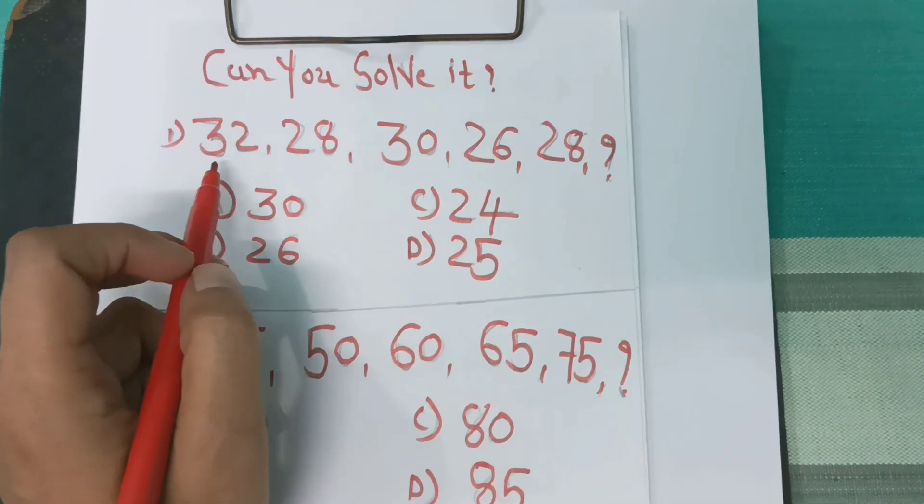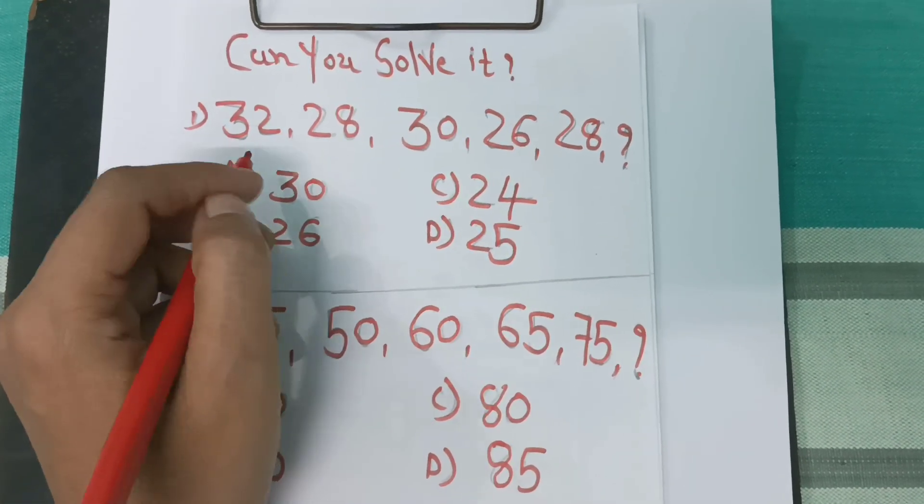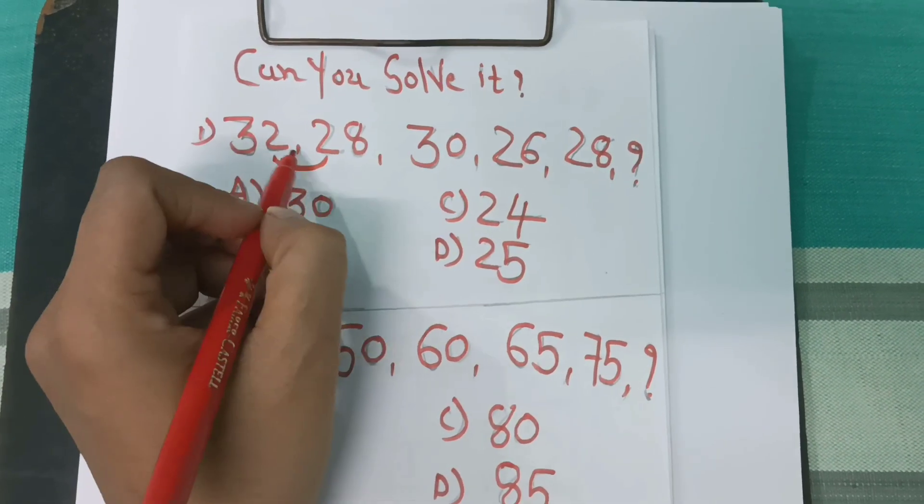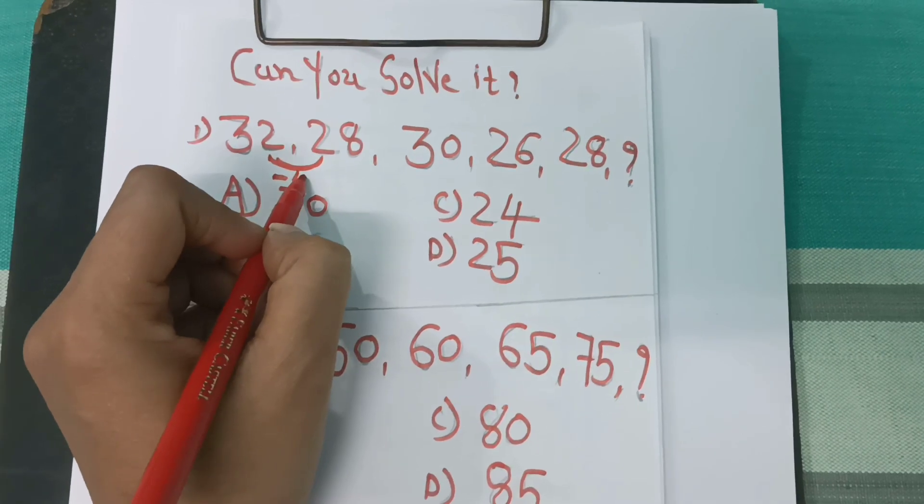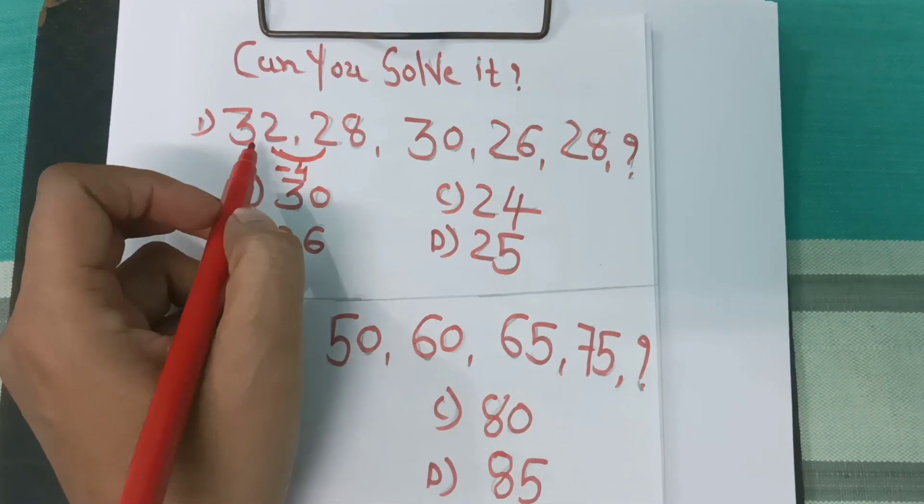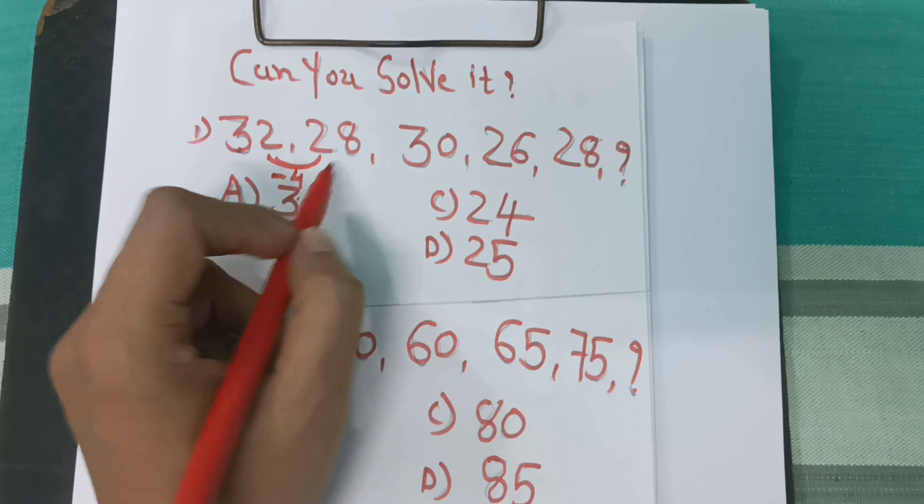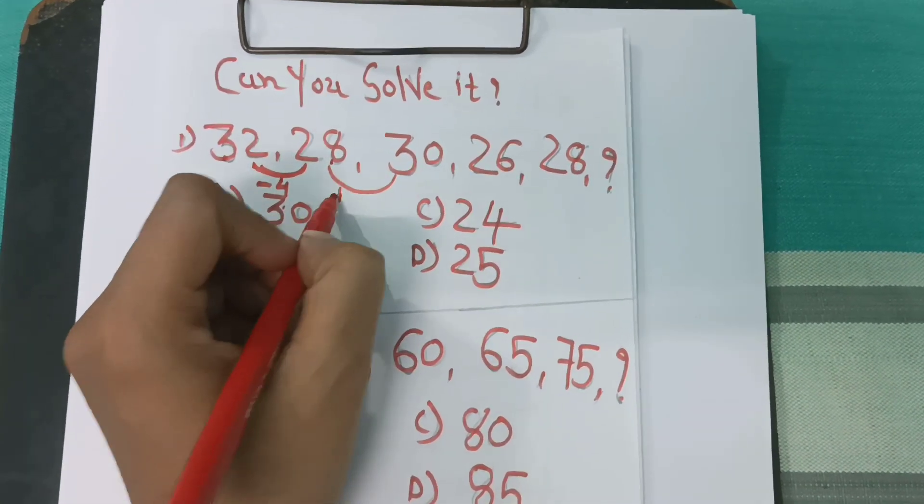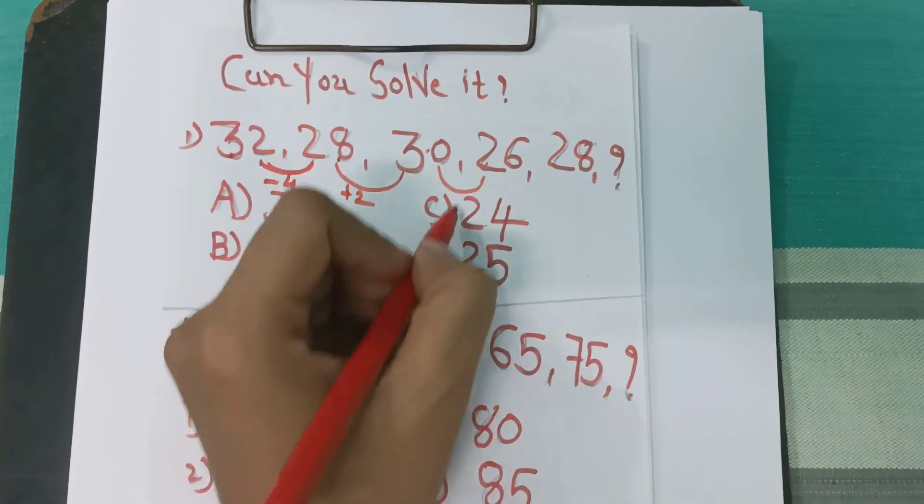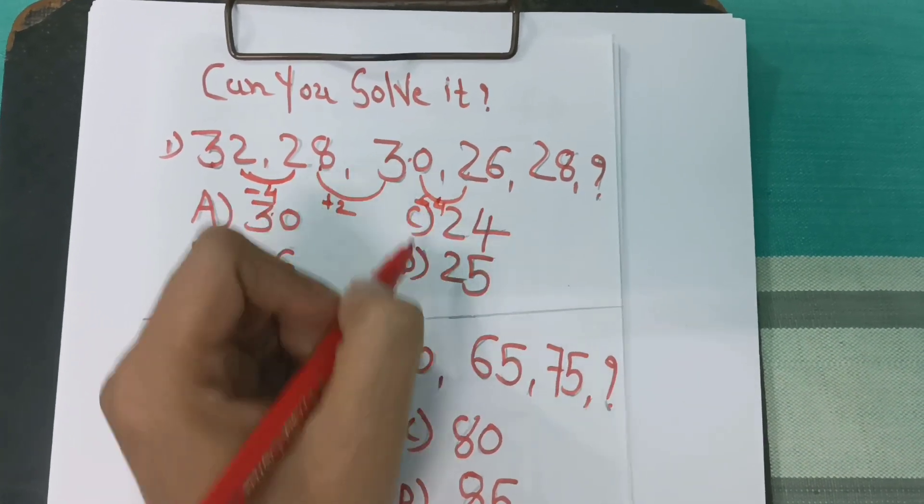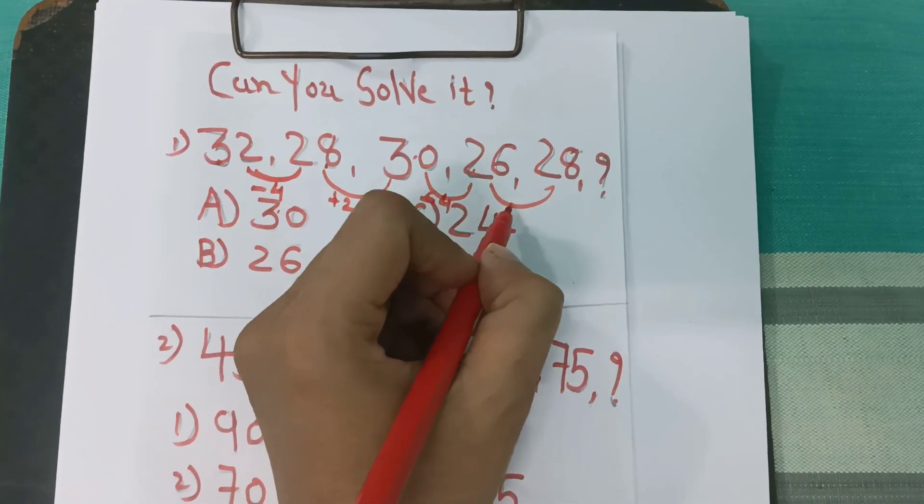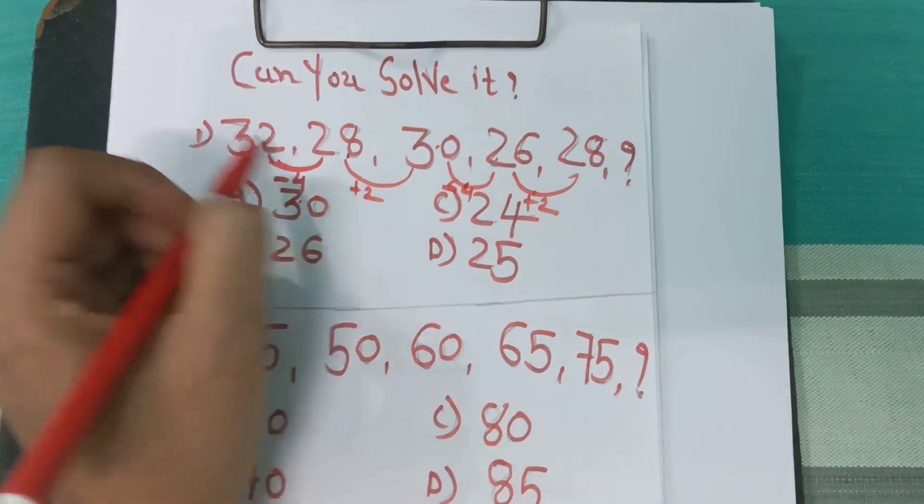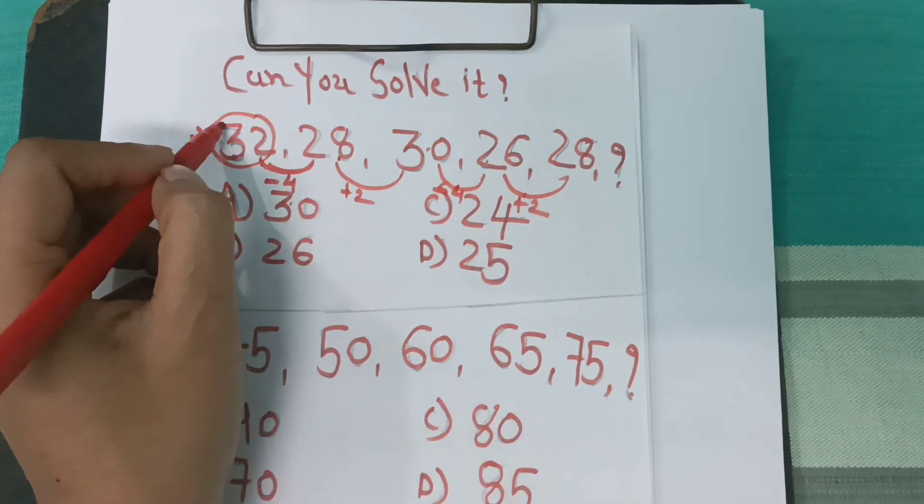See how to solve it. Whenever this type of question is in front of you, what you first do is take the difference. What is the difference here? That is minus 4. If we deduct 4 from 32 then 28, here 28 plus 2 equals 30, then minus 4, then plus 2.